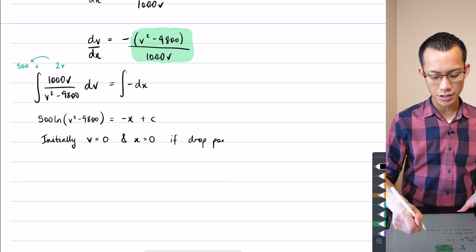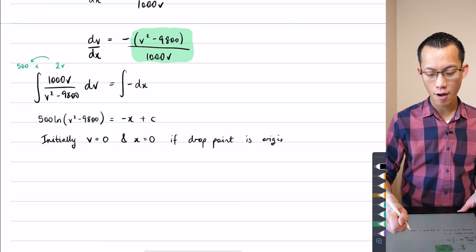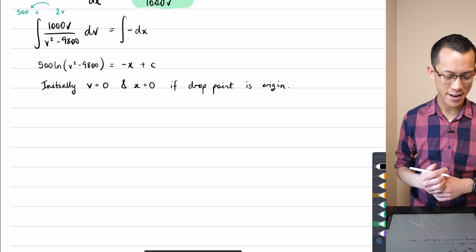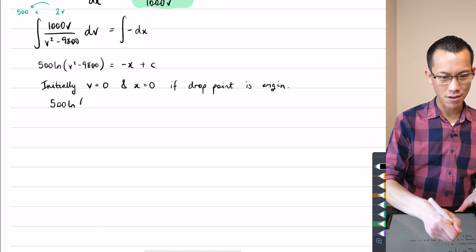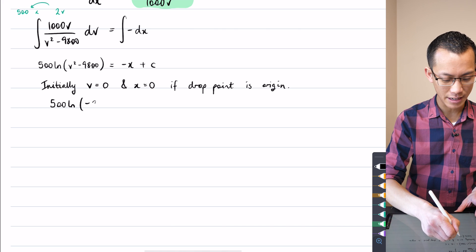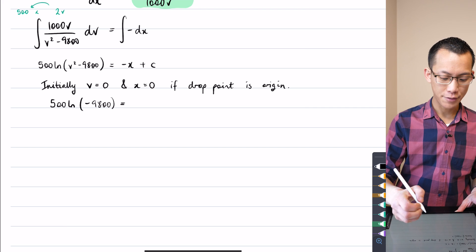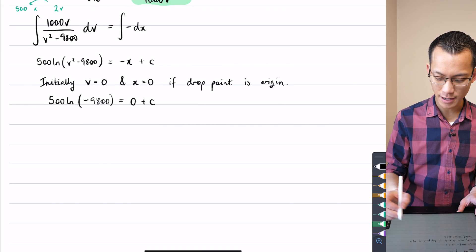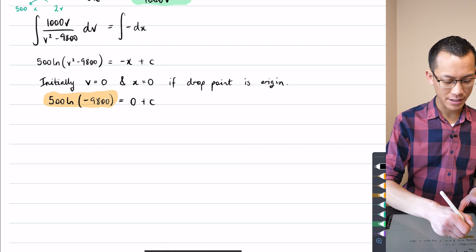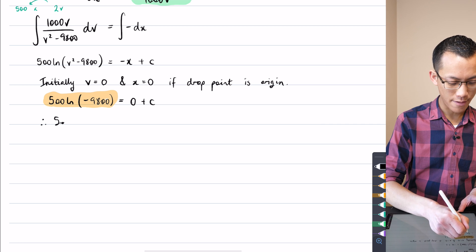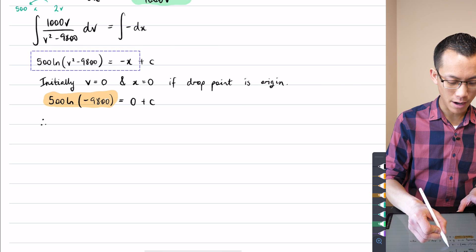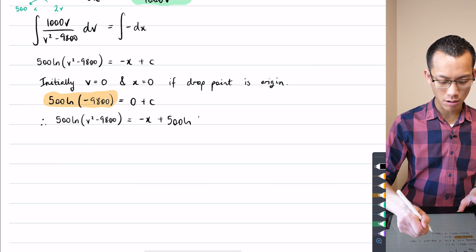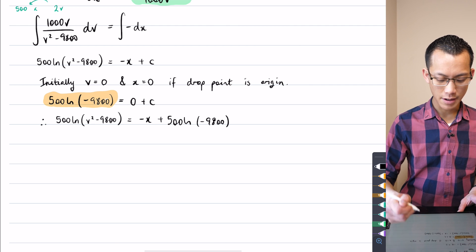I'm just gonna call that the origin so I'm gonna say for convenience initially I've got a velocity of 0 because falling from rest and x equals 0 if the drop point is the origin. So I'm gonna get 500 log of when you put in the v equals 0 you get negative 9800 and you get 0 plus c. So I've got my value for c. I'm going to substitute that back into the line I had above. That's going to be equal or added to 500 log of my negative 9800.